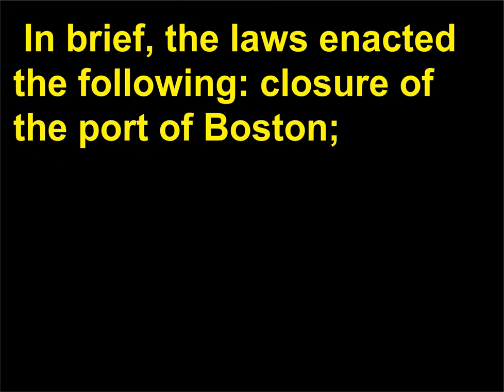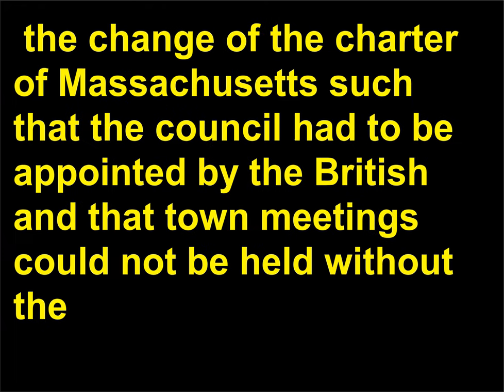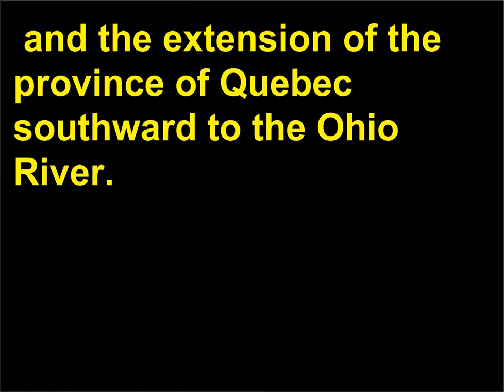In brief, the laws enacted the following: closure of the Port of Boston; an English trial for any British officer or soldier who was charged with murder in the colonies; the change of the Charter of Massachusetts such that the council had to be appointed by the British and that town meetings could not be held without the British-appointed Governor's permission; the requirement that the colonists house and feed British soldiers; and the extension of the province of Quebec southward to the Ohio River.